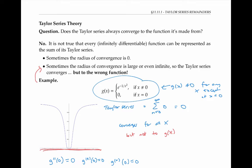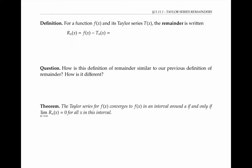Fortunately, this behavior doesn't happen for most of the functions that we typically deal with. To understand better which Taylor series are guaranteed to converge to their functions, let's take a look at the idea of remainders. For a function f of x and its Taylor series t of x, the remainder is written r sub n of x equals f of x minus t sub n of x, where t sub n of x is the nth degree Taylor polynomial.